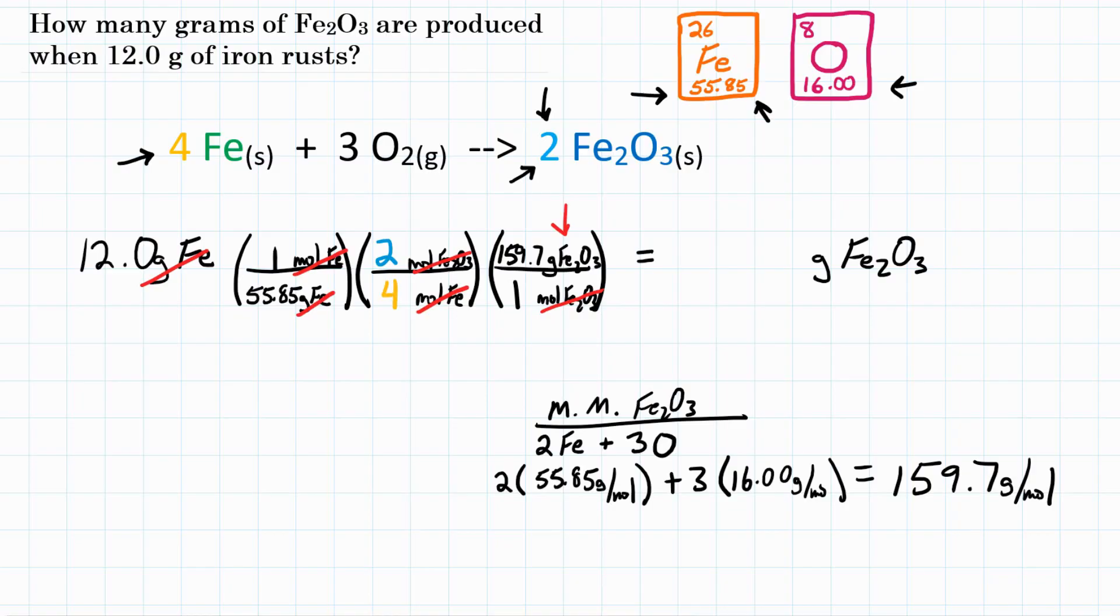So let's plug everything in our calculator. We're going to do 12.0 times the top of the first fraction, which is one. So we can skip that because it won't change it. Divided by the bottom, 55.85. Times the top of the second, times two. Divided by the bottom, divided by four. Times the top of our third conversion factor, so times 159.7. Divided by the bottom is just one, so we can skip that, and we'll hit equals.